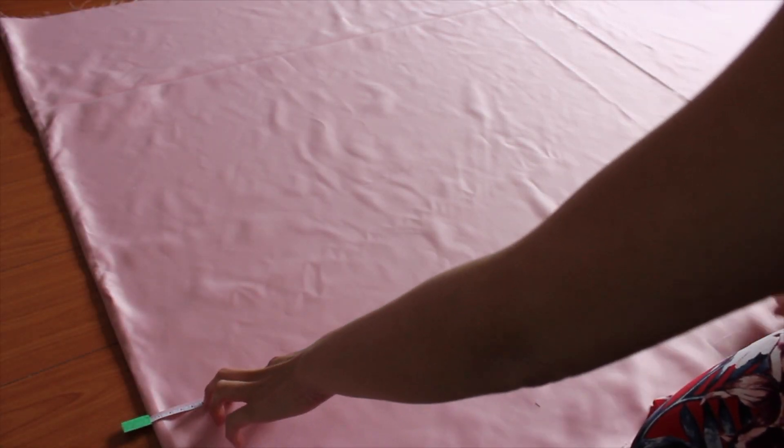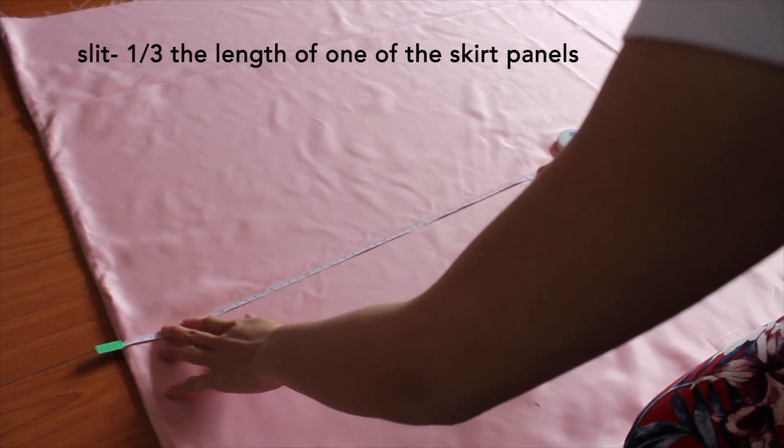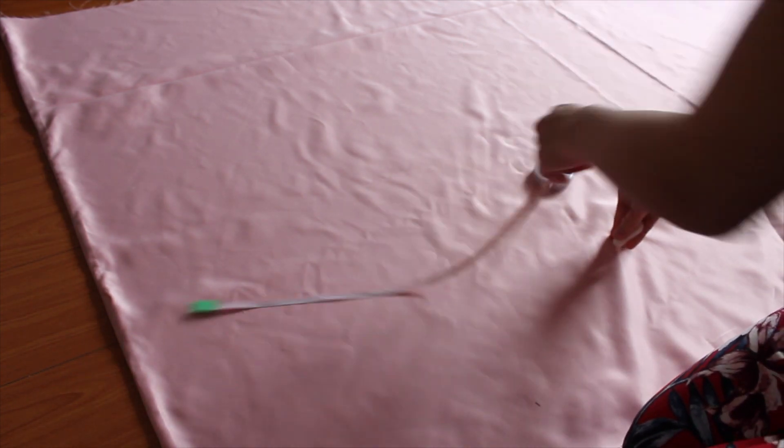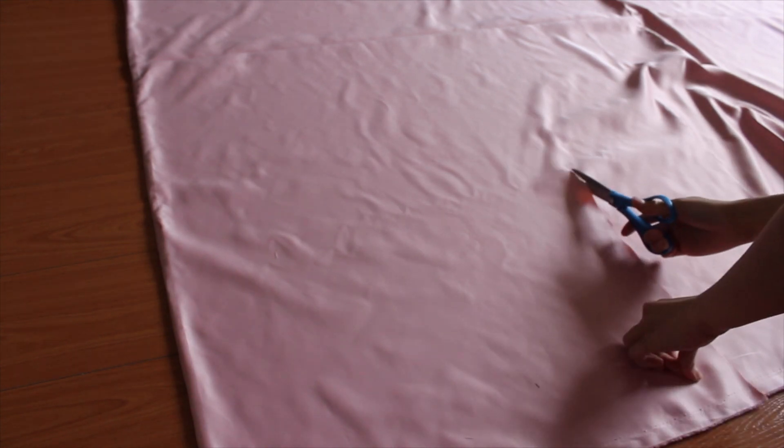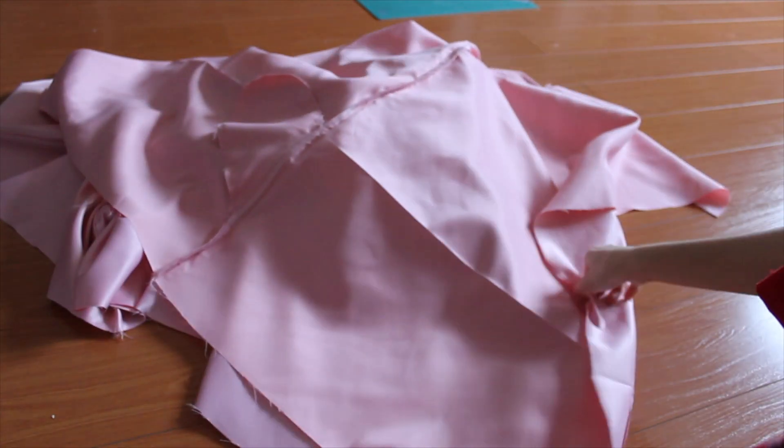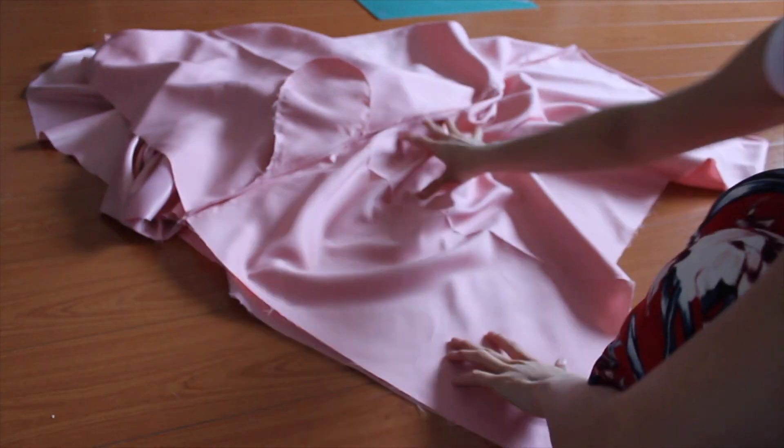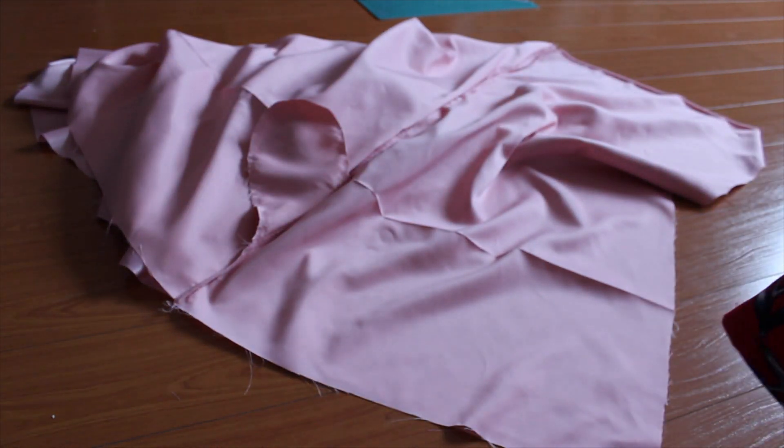Next I measured out the slit and so what I did was I divided the length measurement by three and measured that all the way up and cut it from there. With right sides together, I sewed the slit 11 inches from the top. I also did a rolled hem for the unfinished parts of the slit.